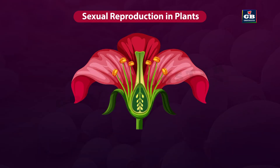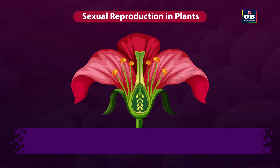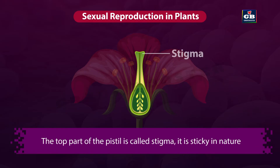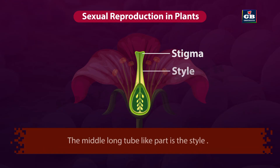Pistil has three main parts: stigma, style, and ovary. The top part of the pistil is called stigma. It is sticky in nature. The middle long tube-like part is the style.